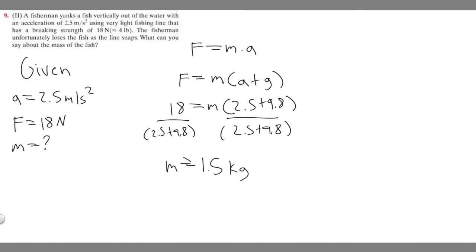We know the mass at the breaking point is going to be this. But we know that the fisherman loses the fish because the line snaps. So that means his mass is going to be greater than this, right?